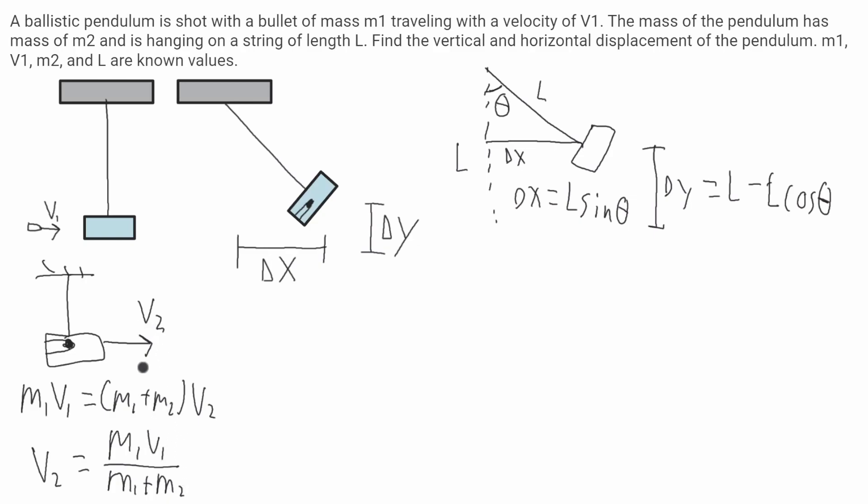Now I can set up a conservation of energy equation from this point here when the bullet is no longer losing any energy to the point where it's at its maximum position and has its maximum displacement.